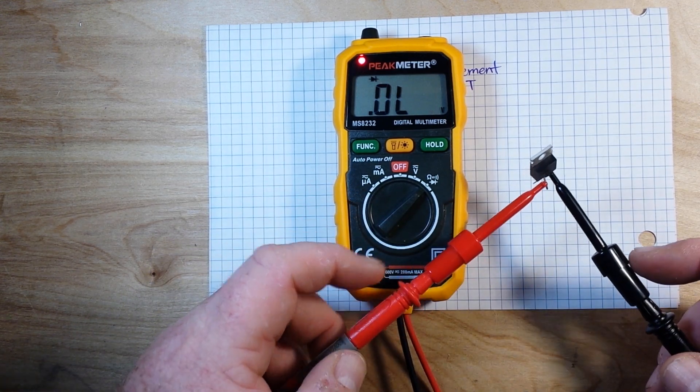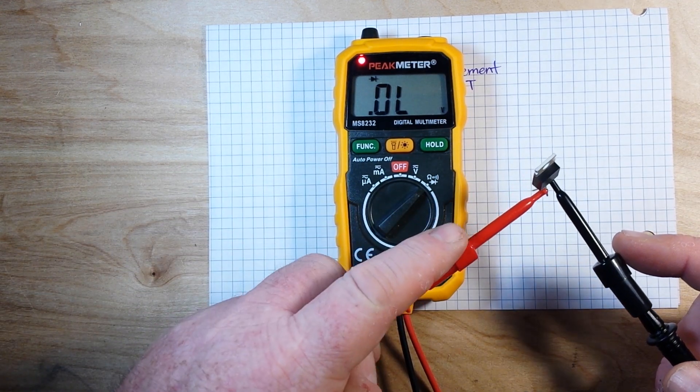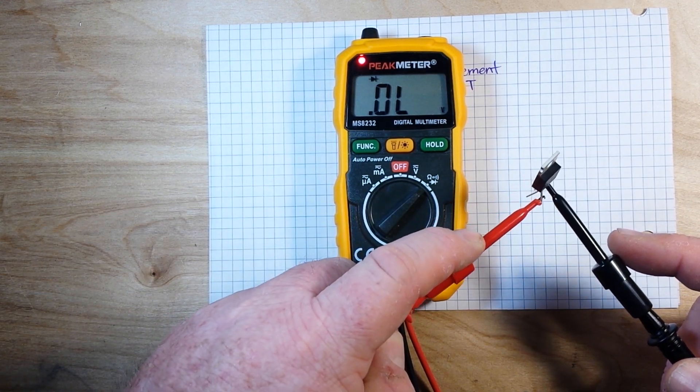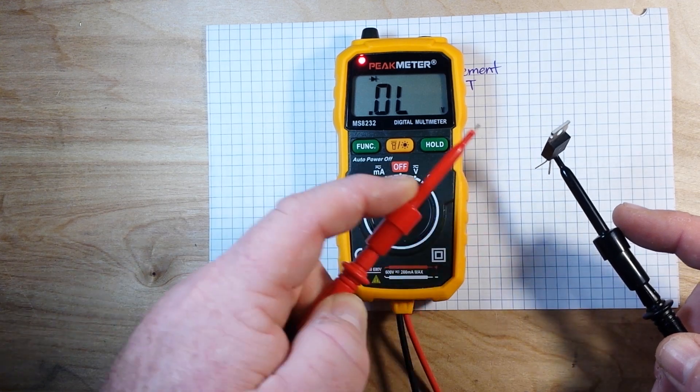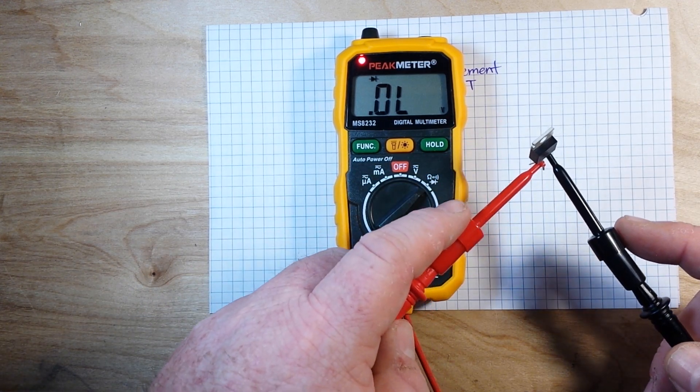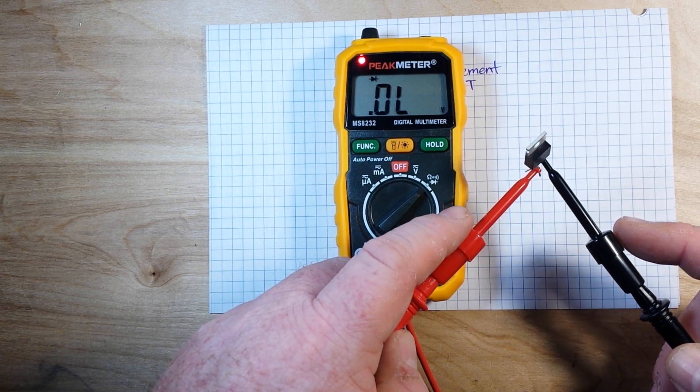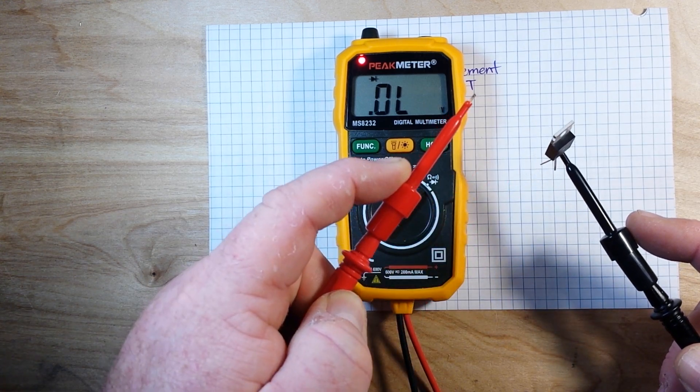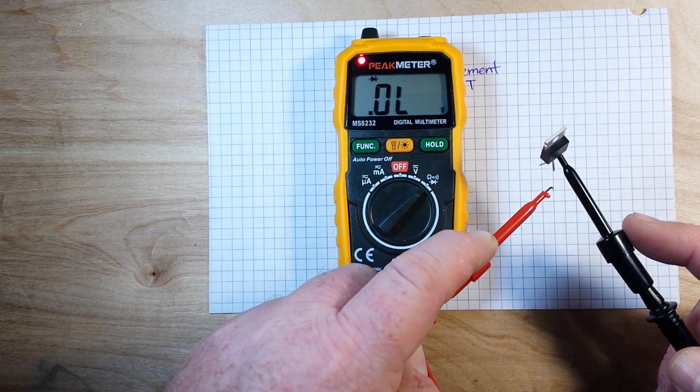So to test it, like I said, put your positive lead on the drain, negative lead on the source, and there should be zero. Remove the positive lead, touch the gate, come back to the drain, you should have conductance.